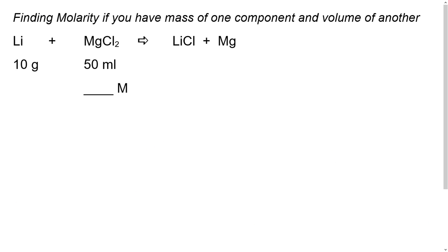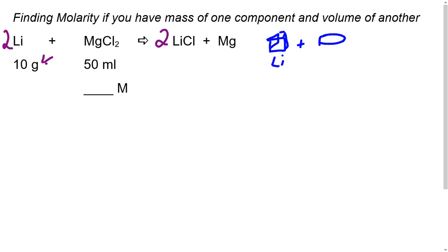The second example problem asks us to find a molarity if you have a mass of one component and a volume of another. The equation is not yet balanced, so we put a 2 in front of lithium chloride to balance the chlorines, and a 2 in front of lithium. We are given 10 grams of lithium and 50 milliliters of magnesium chloride solution—imagine solid lithium being added to a beaker containing the MgCl₂ solution. Our goal is to find the molarity.